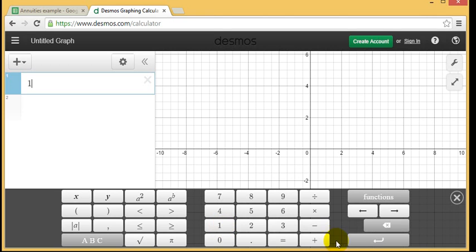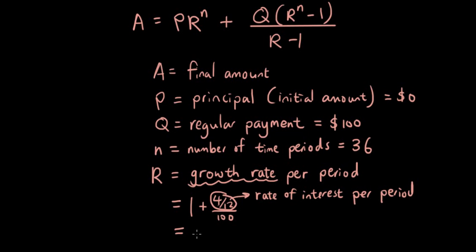So it's one plus, bracket four over twelve, divided by a hundred. And you get 1.0033333, 1.003 recurring. So let's put that into our formula. So it's 1.003 recurring.